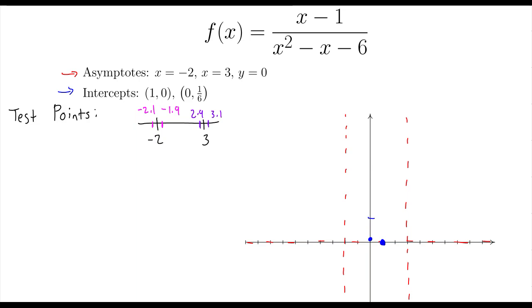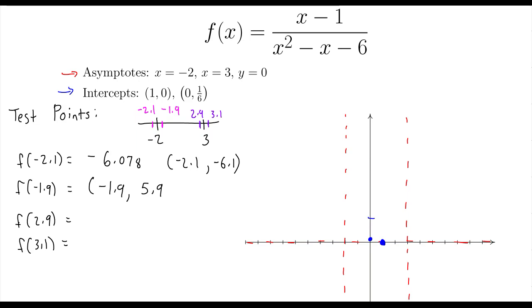I'm not going to write out the entire thing. I think by now we kind of know how to go about and find them. If I type them in my calculator, I end up with negative 6.078, to give me the test point negative 2.1 comma negative 6.1. I'm going to round that a little bit. Negative 1.9 and 5.9. This is going to be 5.9184, so that's the point negative 1.9 comma 5.9.